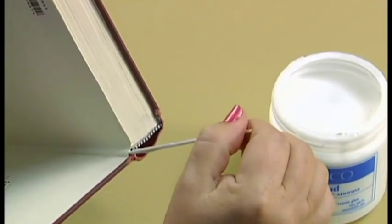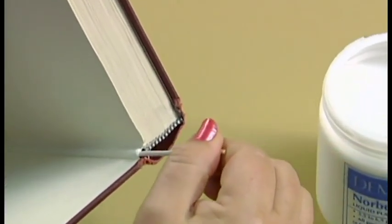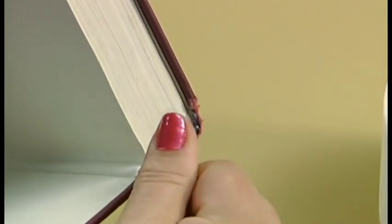Use the mending stick to work the Norbond into the area which is torn loose. Work from each end to ensure that the adhesive reaches the entire area.